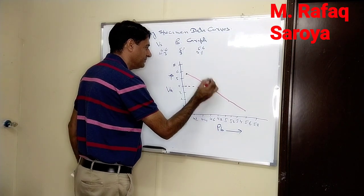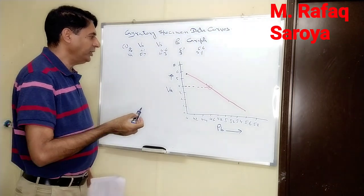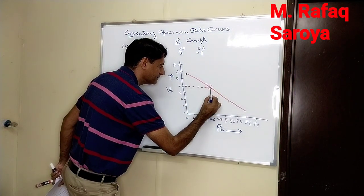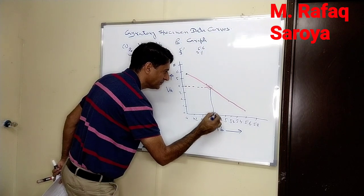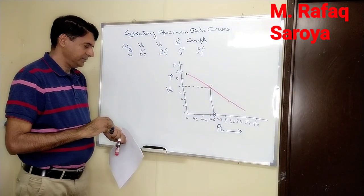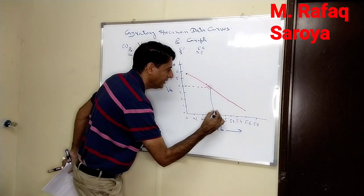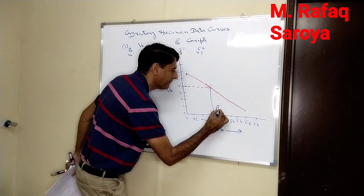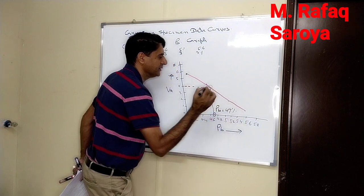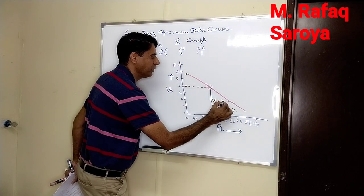From this point of touch, I will find out what is the value of the binder content. It is coming at this point, so the value of PB comes out to be 4.7%. The value of air void as per Superpave specification is 4%.